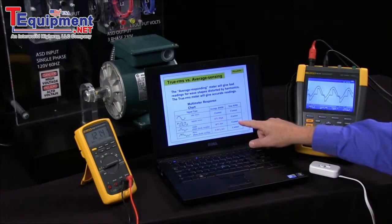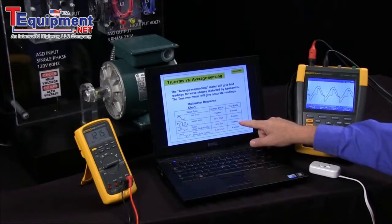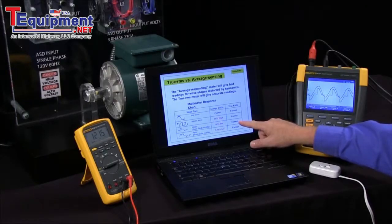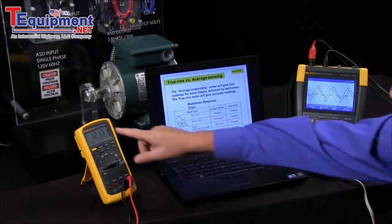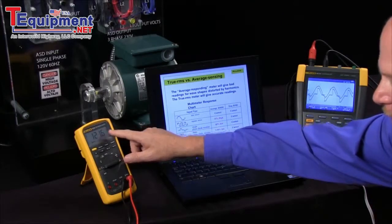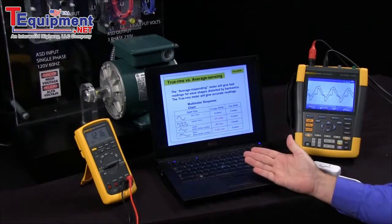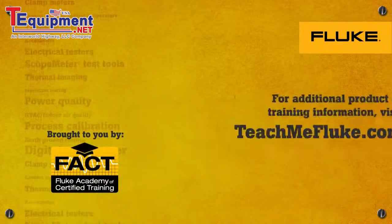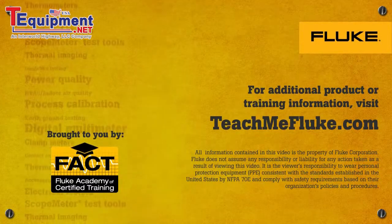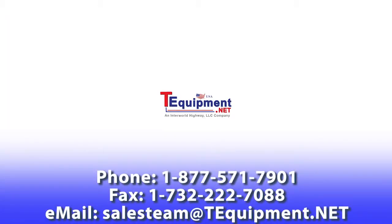This could cause you a lot of problems if you have a breaker that's popping intermittently and you measure it with an average responding meter. You're reading 13 amps on a 15-amp breaker, you say, okay, well that's not the problem. If you take a true RMS meter, you might read 18 amps on that 15-amp breaker, and then you're saying, I wonder why it's not popping all the time. So in today's world of electronic loads, it's very important to have a true RMS multimeter or a true RMS clamp meter to get the correct reading on current.